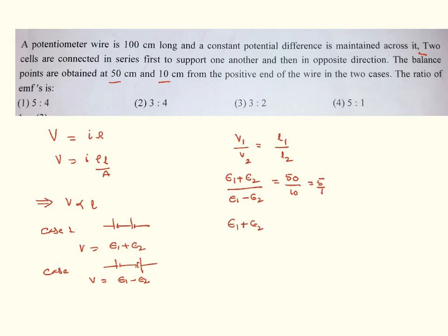Then by cross-multiplying, you can get E1 plus E2 equal to 5E1 minus 5E2. That implies by rearranging the terms, 6E2 equal to 4E1. That means E1 by E2 is equal to 6 by 4. That is nothing but equal to 3 is to 2. And hence, third one is the answer for this question.